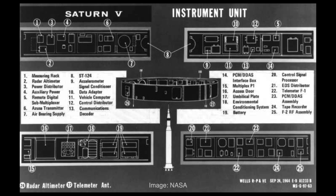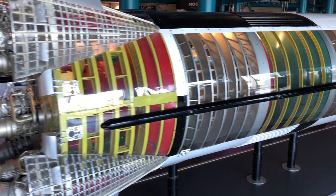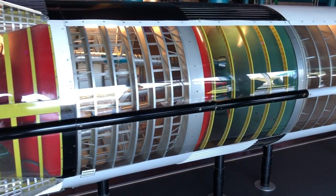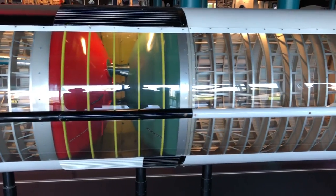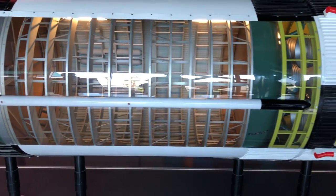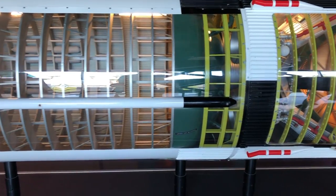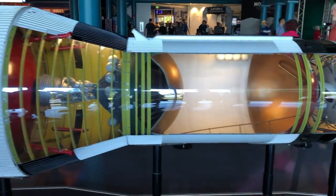There is also an important interstage ring above the third stage: the instrument unit, which was the computer brain of the Saturn V and did the necessary calculations to guide the rocket. This model of the Saturn V at Kennedy Space Center has transparent side panels so you can see what's going on inside the rocket. Notice how much of the rocket is taken up by tanks for fuel and oxidizer.